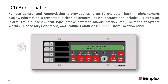The remote control and enunciation is provided using an 80-character, backlit, alphanumeric display. Information is presented in clear, descriptive English language and includes point status, alarm type, and a custom location label, number of system alarms, supervisory conditions, and trouble conditions.